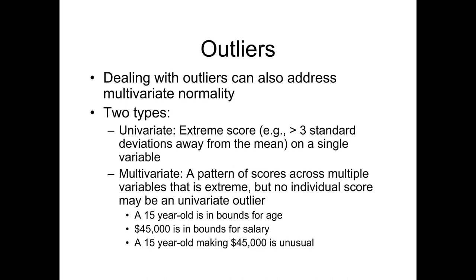When we look at outliers, we've looked at this with univariate data, but with multivariate data we have to look at how it relates to each function together. For example, being 15 years old is a very normal age. A salary of $45,000 is probably very normal. But a 15-year-old making $45,000 is not usual. Taking these two variables together — the multivariate part — that's when it becomes an outlier multivariately.